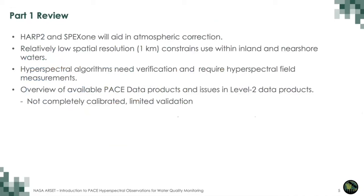HARP2 and SPECS1 will aid in atmospheric correction, useful for deriving water quality parameters — correcting OCI reflectances with HARP2 and SPECS1 data. One thing to note about PACE is that there is relatively low spatial resolution of about one kilometer, which constrains use within inland and near-shore waters. Hyperspectral algorithms need verification and require hyperspectral field measurements, and an overview of available PACE data products was discussed by Dr. Manino. The data are not completely calibrated and there is limited validation so far.